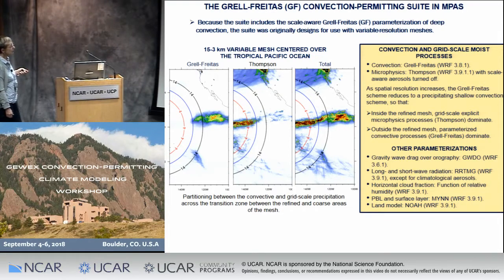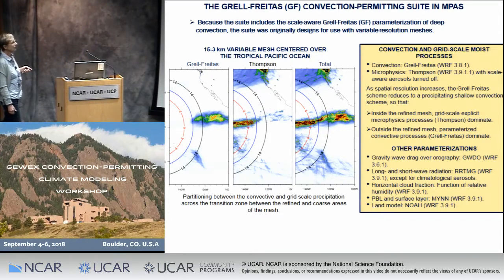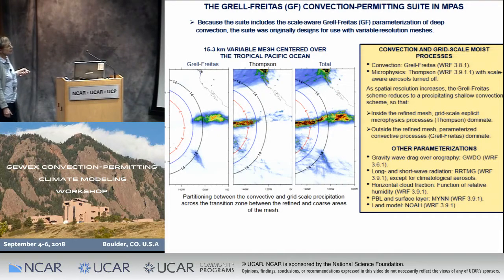As we move across the transition zone, the contributions of deep convection start to decrease and those of the grid scale cloud microphysics increase — this is the precipitation from the Thomson scheme. So when you go from the coarse mesh to the refined area of the mesh, you almost see no spurious transitions in the total precipitation.